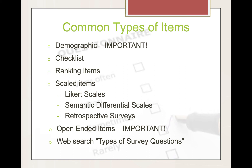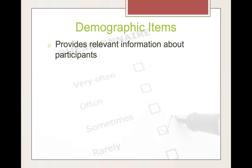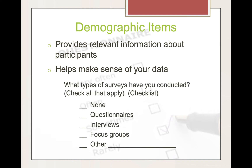Here are some examples. Demographic items provide relevant information about participants and help you make sense of your data by getting enough information about who they are and how they view the subject or experience in the particular topic you're surveying. Here's an example: 'What types of surveys have you conducted? Check all that apply.' This is a checklist item as well as a demographic item. They can check none, questionnaires, interviews, focus groups, or write in something else.